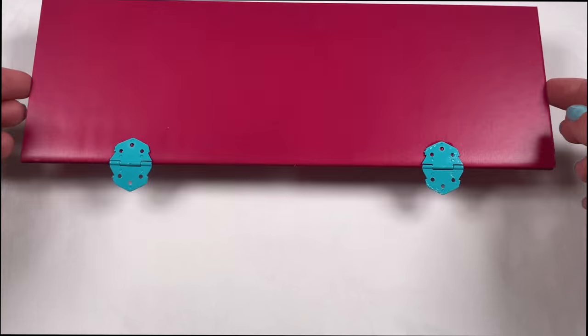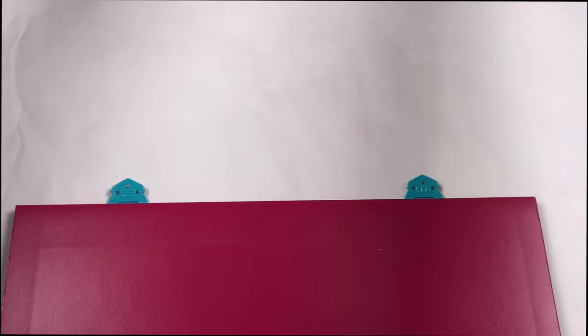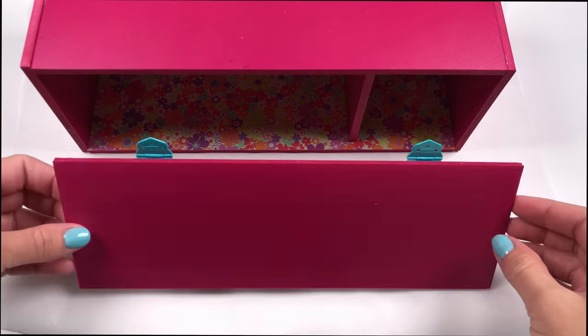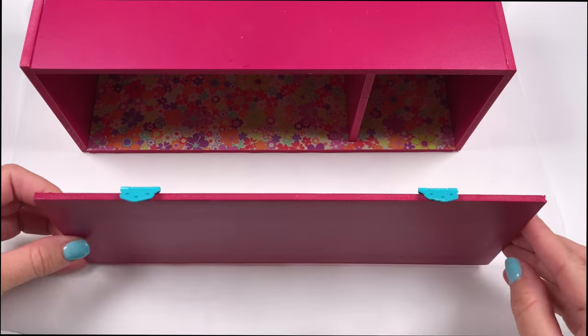And once it's dry, you can flip your locker door over, bring your locker down on the side. Now you're going to flip your hinges in and apply the super glue.